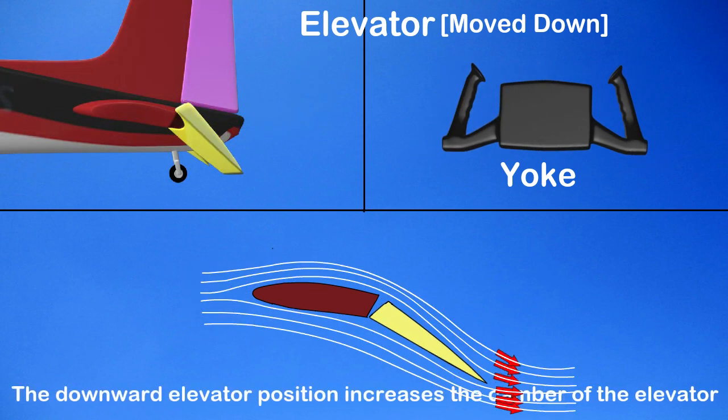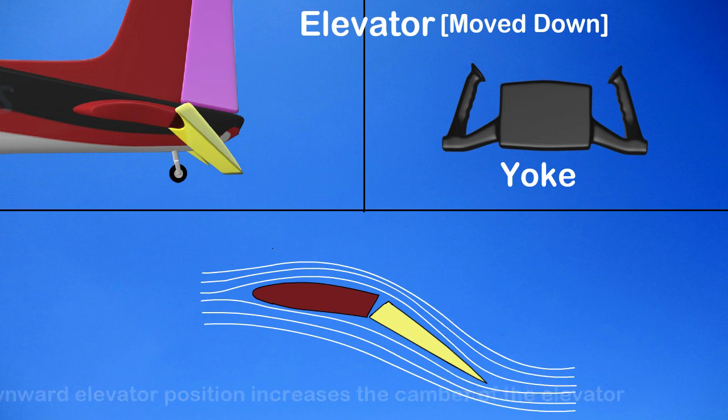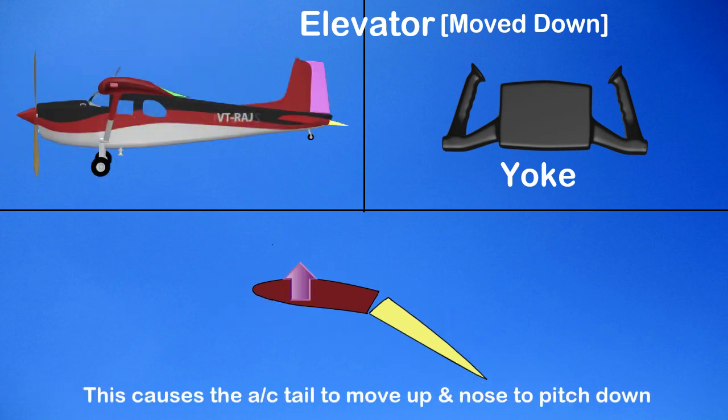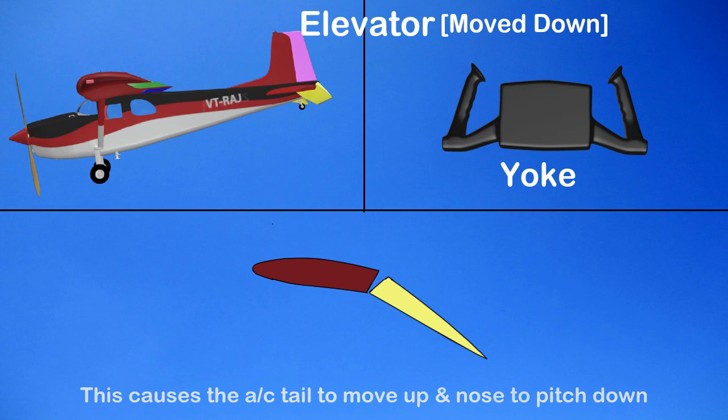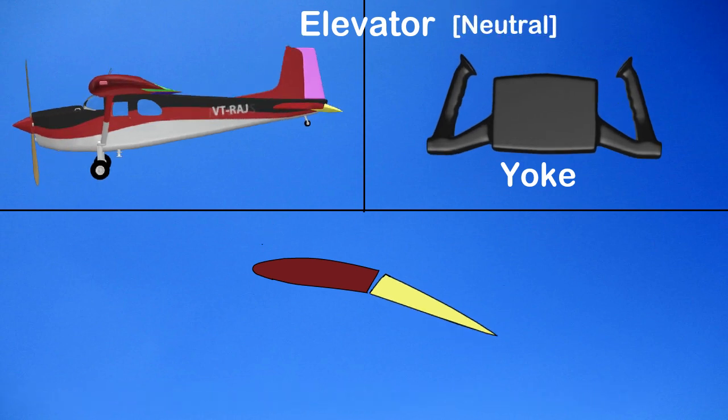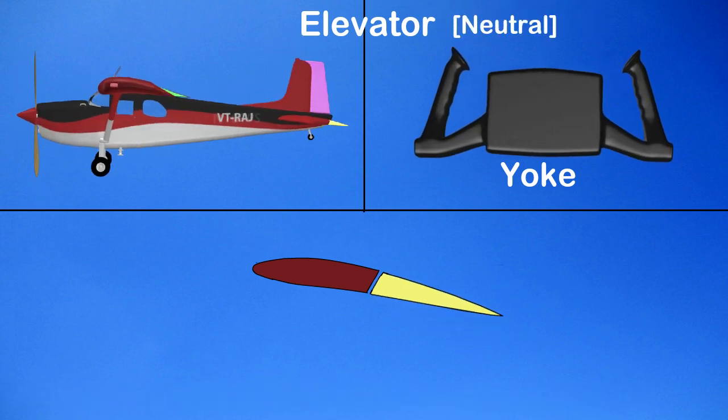The elevator moves down and increases the camber. This increases the lift created by the horizontal stabilizer and elevator. This causes the aircraft tail to move up and the nose to pitch down. Now the elevator is moved back to the neutral position.